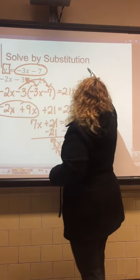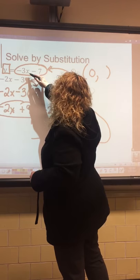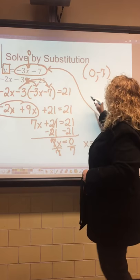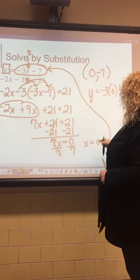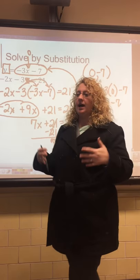It's now a two-step equation: subtract 21 from both sides to get 7x equals 0, then divide by 7 to get x equals 0. Our solution so far is 0-comma-something. Plug 0 back into the isolated equation: y equals negative 3 times 0 minus 7, which is 0 minus 7, equals negative 7. So y equals negative 7.